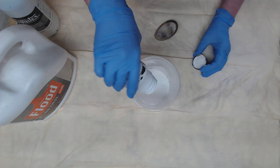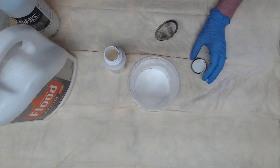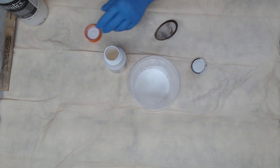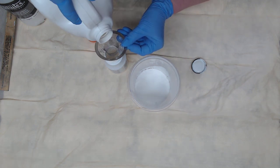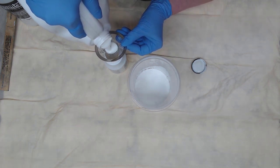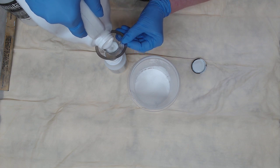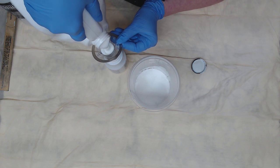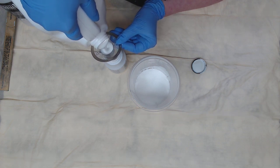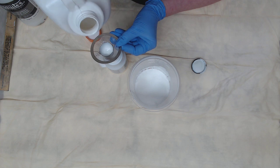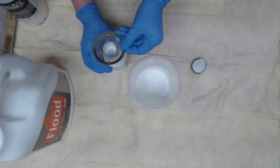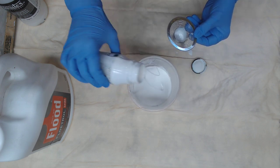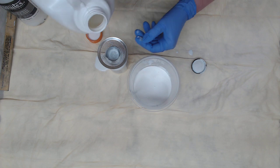So that was half a bottle of the Liquitex pouring medium. Some people are using glue, and you can do that too. So then I'm going to put two bottles of Floetrol. Hard for me to see in there. Oops, I made a mess. Don't do that.